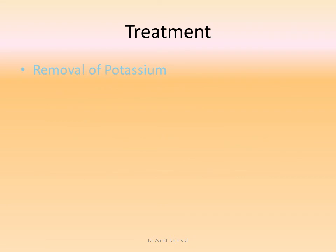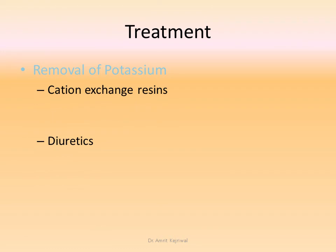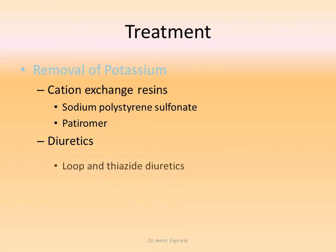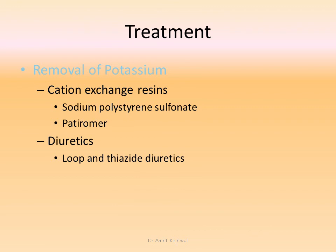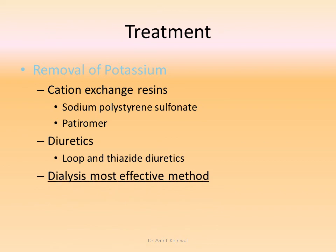Removal of potassium from the body must also be done. It can be achieved by cation exchange resins such as polystyrene sulfonate or patiromer. Loop and thiazide diuretics can also be used. But the most efficacious and effective way of removing potassium from the body is dialysis.